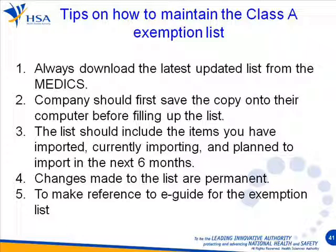Here are some tips on how to maintain your Class A exemption list. Whenever you do a renewal, modification, or any updates, always download the latest copy from the system first, then save it to your computer before filling out any entries. The list should include items you have currently imported, or are planning to import in the next six months. Please note that changes to the list are permanent — any incorrect entries cannot be deleted, so make sure all entries are correct before uploading the form.